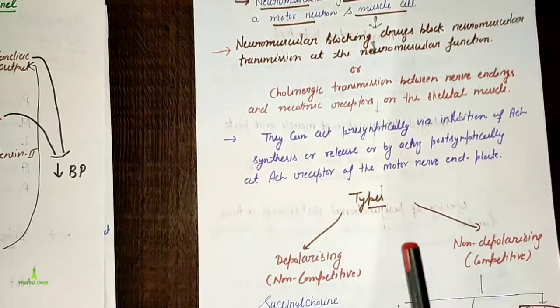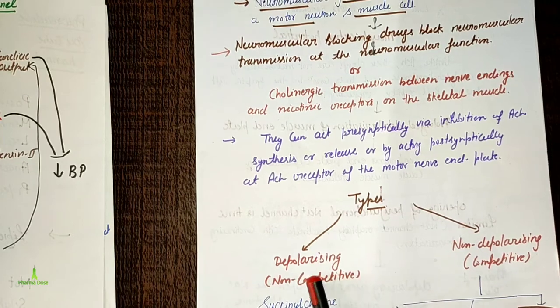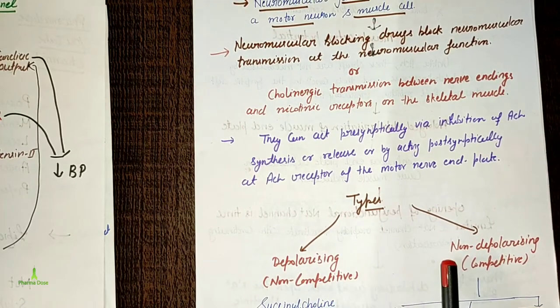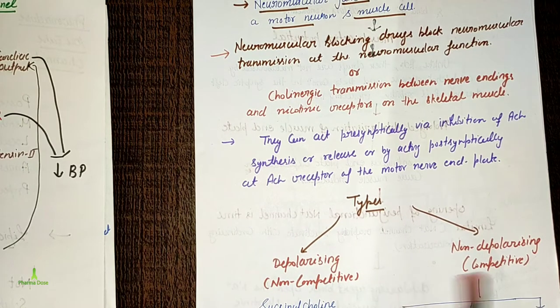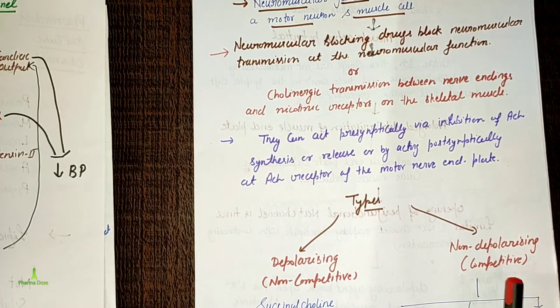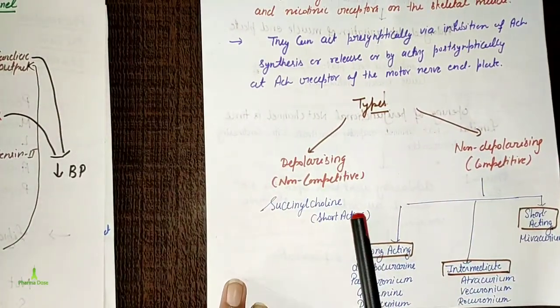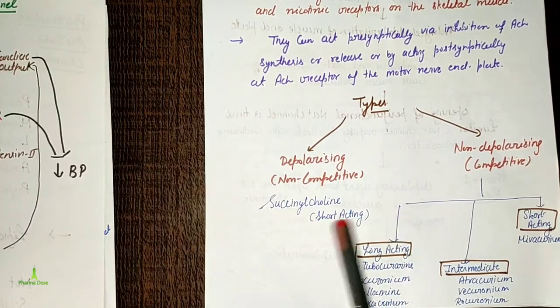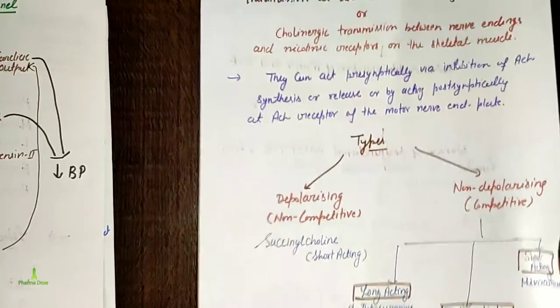There are two types of neuromuscular blocking drugs: depolarizing and non-depolarizing. Depolarizing means depolarization through the drug, also known as non-competitive drug. Non-depolarizing is also known as competitive drug. The depolarizing drug is succinylcholine, which is a short-acting drug.